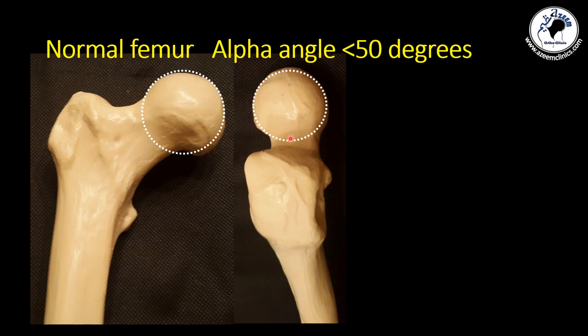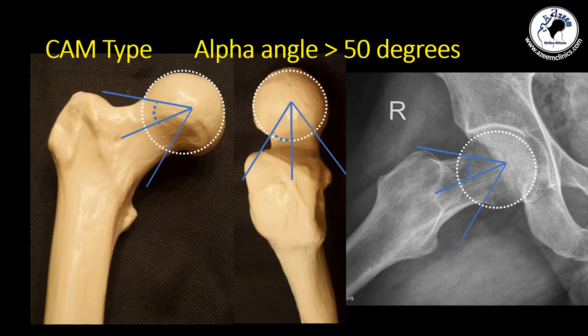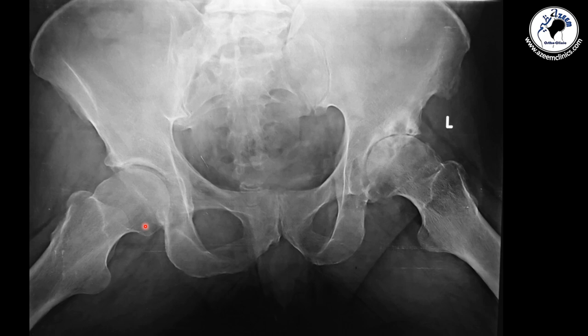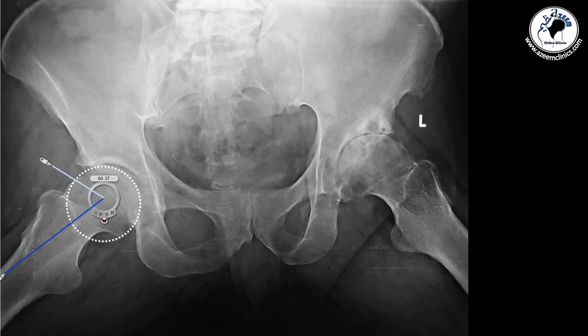Normally, what we assess at the head and neck junction is the alpha angle. The alpha angle is defined as the angle between the line centered at the head and neck junction and the line at which the bone first comes out of the best-fit circle drawn around the femoral head. This alpha angle can be measured on the AP, on the lateral radiograph, or on any view. Usually, this alpha angle should be less than 50 degrees. An abnormal head and neck junction where the bone comes out early gives a large angle of 70 degrees, for example.